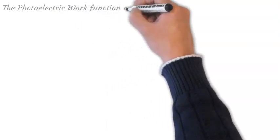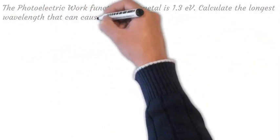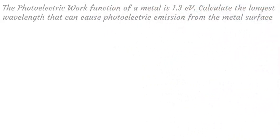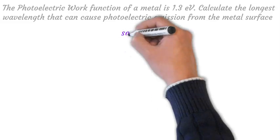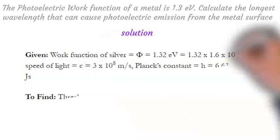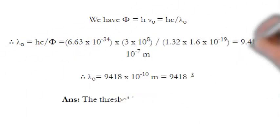The photoelectric work function of a metal is 1.3 electron volts. Calculate the longest wavelength that can cause photoelectric emission from the metal surface. We are given the work function and we know Planck's constant and the speed of light. We can use the work function formula to solve for the threshold wavelength.